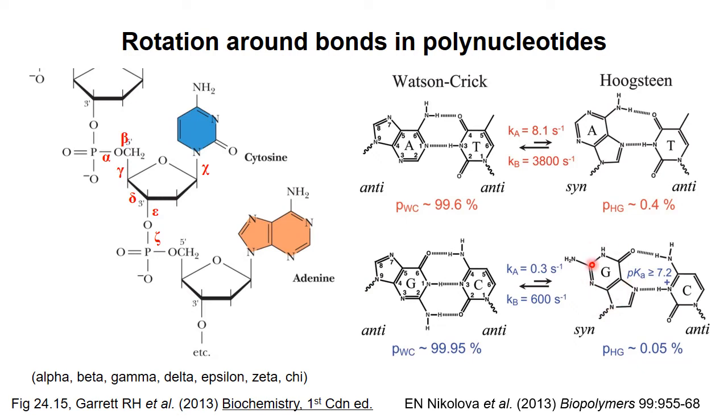The base pairs on the right are called Hoogsteen base pairs, and at any given moment in a B-DNA double helix, a particular base pair can shift from Watson-Crick to Hoogsteen base pairing. The Watson-Crick configuration is more stable, so a given base pair will spend only a small fraction of the time in the Hoogsteen configuration. But Hoogsteen base pairs do exist in solution, as measured by NMR spectroscopy.